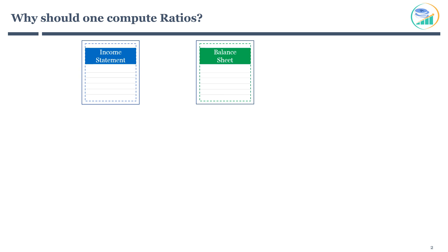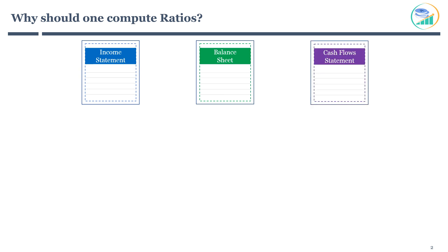The third financial statement is the statement of cash flows. A cash flow statement summarizes the amount of cash entering and leaving a company. It is very important that stock investors know where to find financial statements, how to use, analyze, and read them. One of the best ways to analyze financial statements is to compute financial ratios.